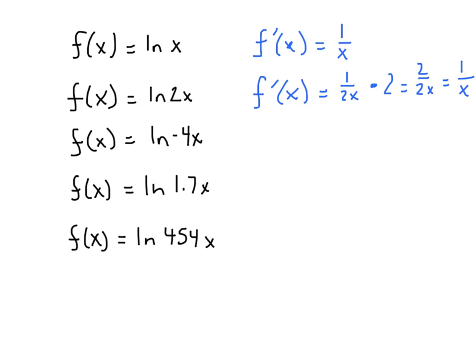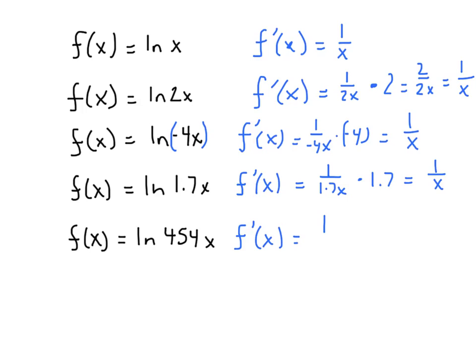Let's try this negative 4x. The derivative is going to be 1 over negative 4x times negative 4. The negative 4s cancel and I end up with 1 over x again. What about a decimal? f prime of x is going to be 1 over 1.7x times 1.7. Again, 1 over x. f prime in this case is 1 over 454x times 454. Again, 1 over x.